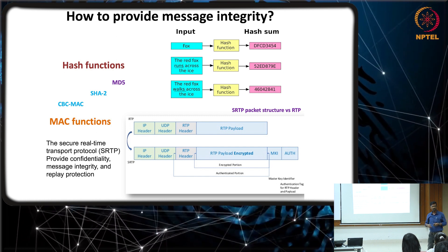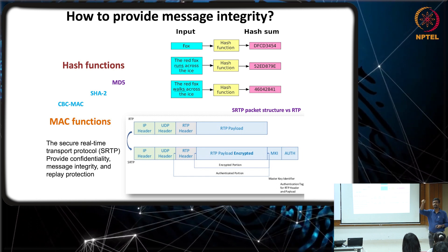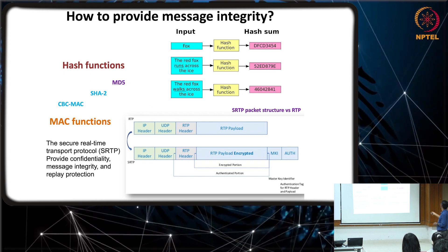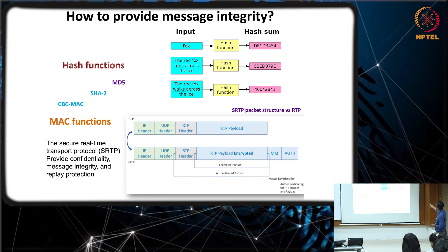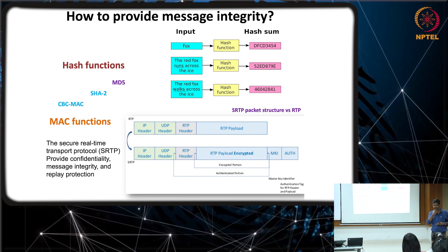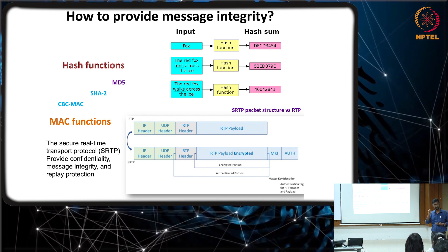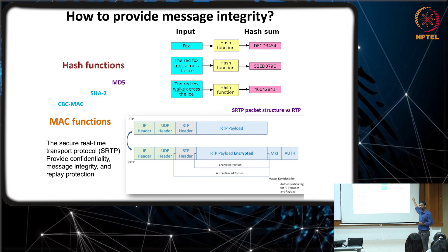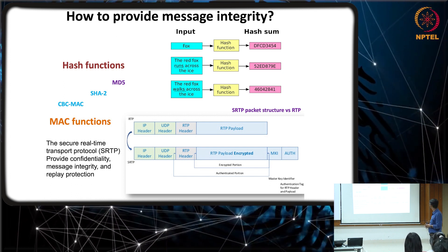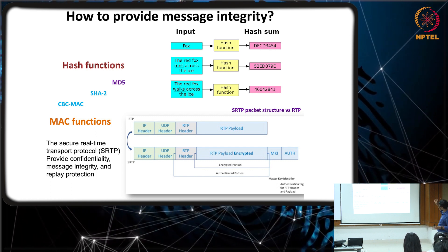Hash functions will take an input of any size and always give a fixed output. For example, the input can be 'fox,' 'the red fox runs across the eye,' or 'the red fox walks across the eye' — different sizes, small differences. I can even put 1 GB of data as input to the hash function. Looking at the output, it is always the same fixed size — here 8 symbols, each taking 4 bits, so 32 bits. Whatever input you give, the output is always 32 bits.